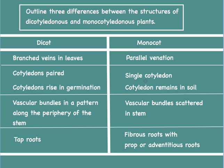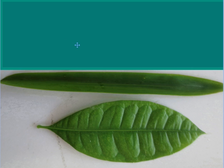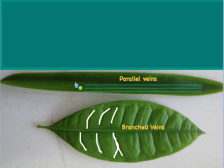Whereas in monocots, the single cotyledon remains within the soil. Other differences include branching patterns of the veins in the leaves, with monocots having parallel venation and dicots having branched veins.